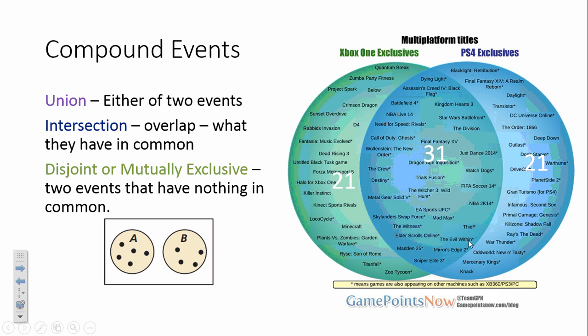The word union is going to mean either of the two events. So when I ask you for a union, I'm asking you how many of these are in either of the two circles. That's what union means. So, union I circled in red.